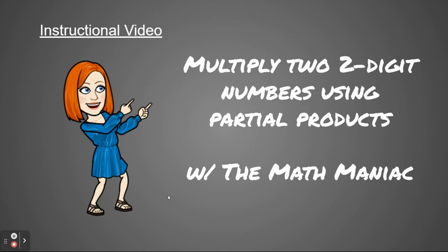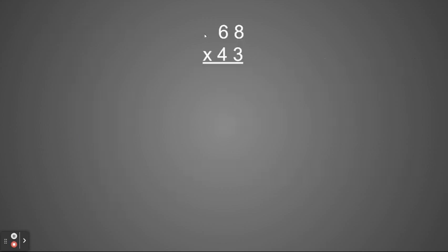Hi boys and girls, welcome back. Today we're going to be multiplying two two-digit numbers using partial products. So we have the equation 68 times 43.